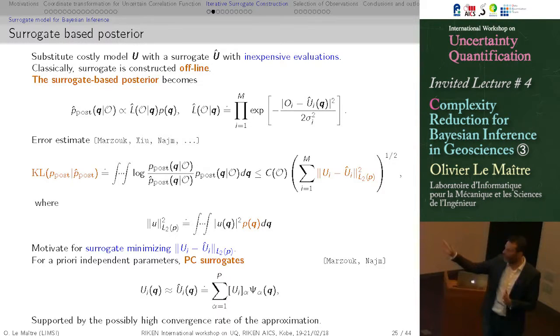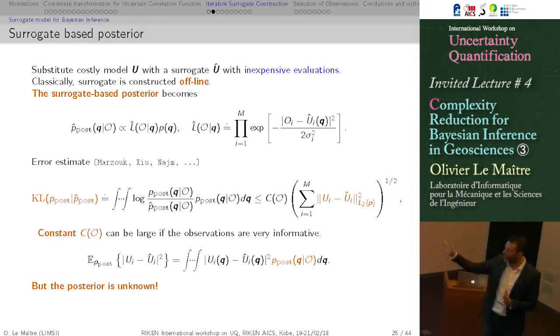Imagine that your observations are so informative that the posterior is a delta function, a dirac. Then what you want to have here is L infinity norm, because you want the error to be very small where it is important, that is on the support of your dirac mass. So instead, what we want to do is to construct surrogate that minimize the error, not in terms of the prior measure, but in terms of the posterior measure. Because we want the approximation to be accurate where the posterior distribution is important. We don't care where we are not going to explore these areas.